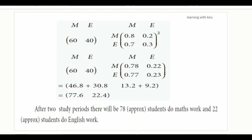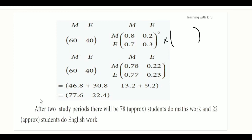We can see the answer here. If we square the matrix, we multiply the matrix again. Squaring the matrix means multiplying it by itself: 0.8, 0.2, 0.7, 0.3 multiplied again gives the two-period transition matrix.